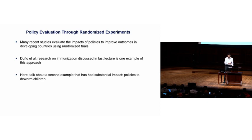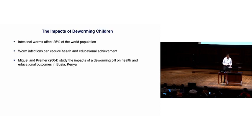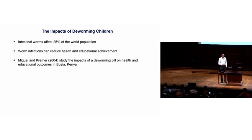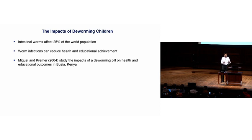I'm going to talk about a second example: policies to deworm children. Intestinal worms affect 25% of the world's population. Worm infections can reduce health and potentially affect educational achievement and life outcomes in various ways. Ted Miguel and Michael Kramer approach this from a social science angle, asking how you can effectively reduce the rate of worm infections through public policy on a large scale.